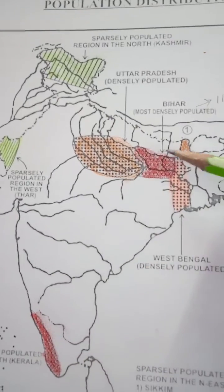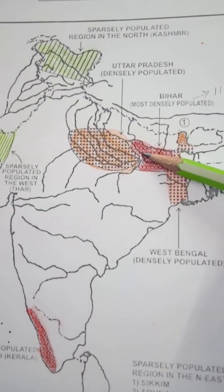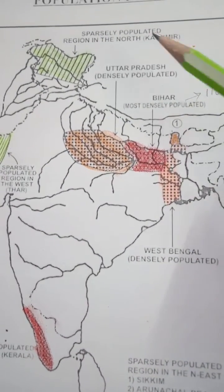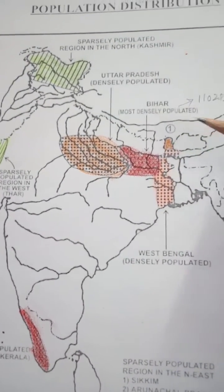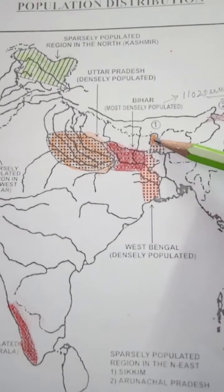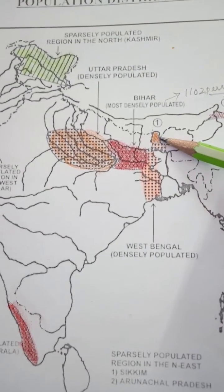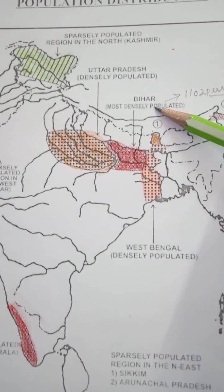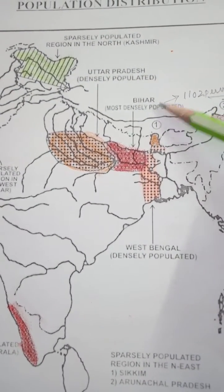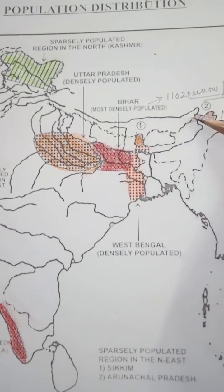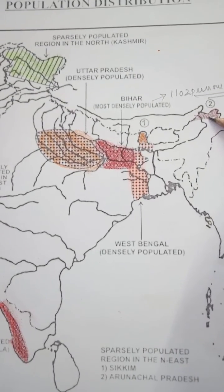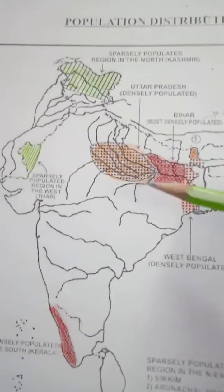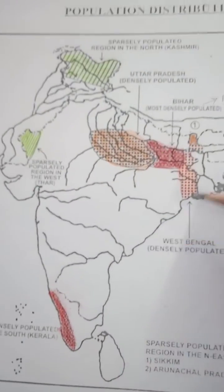To summarize: southern part has Kerala as densely populated; Uttar Pradesh has the highest total population with Sikkim the lowest; Bihar has the highest density; and Arunachal Pradesh has the lowest density. I hope students, you can mark it this way.